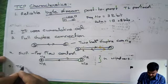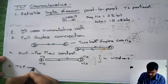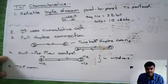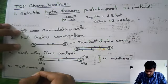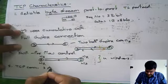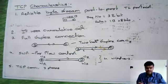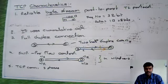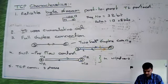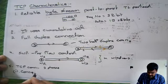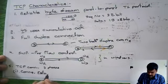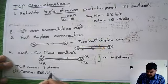The next very important characteristic is the TCP connection. To actually establish the TCP connection, forward the data, and then terminate it, we have a total of 3 phases. The first phase is the Connection Establishment Phase.